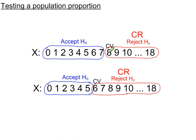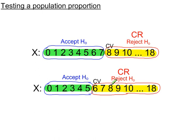In this example, the rejection region is now larger because we're using a larger significance level. Because the rejection region is larger, the probability of a type 1 error just increased. However, the probability of a type 2 error is based on the acceptance region, which is now smaller. So the probability of a type 2 error decreased while the probability of a type 1 error has increased.